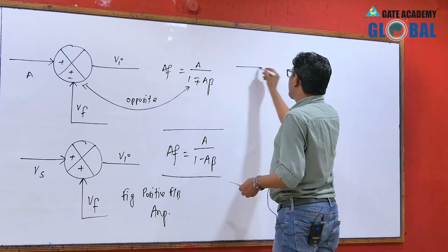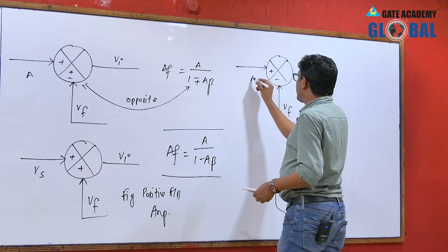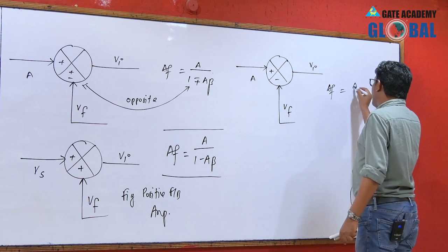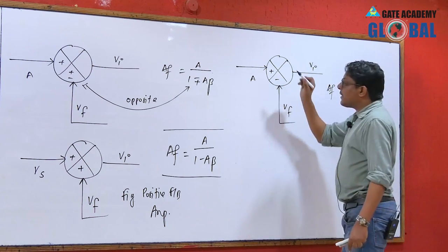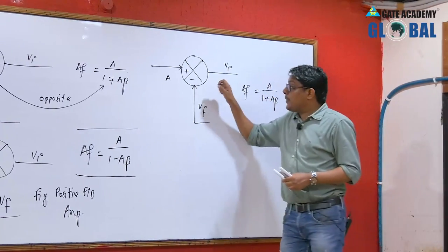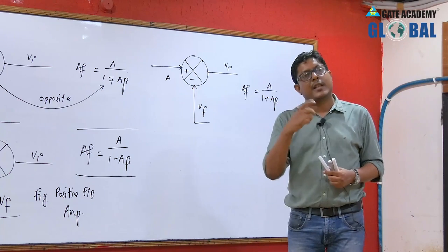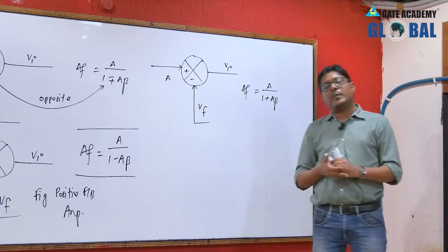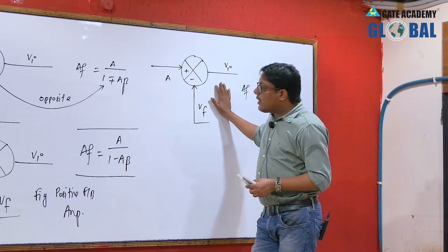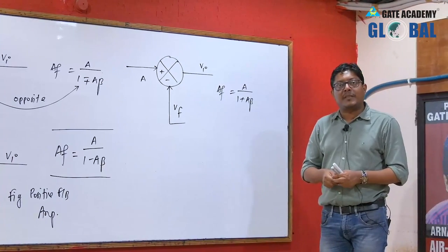If the feedback voltage is connected to the negative terminal of the adder, then the feedback gain will be A upon (1 plus A·beta) — this is negative feedback. Negative feedback is typically used for designing amplifiers. In feedback amplifier analysis, we use a negative feedback system by default. Negative feedback increases the stability of the system, while positive feedback decreases the stability.